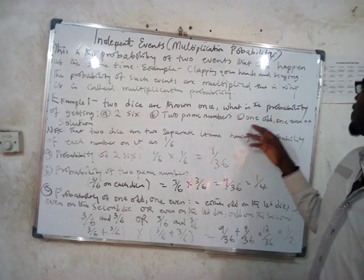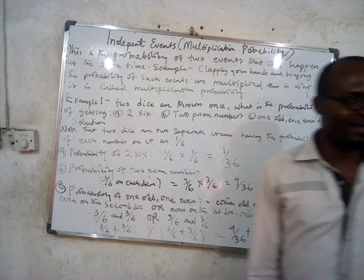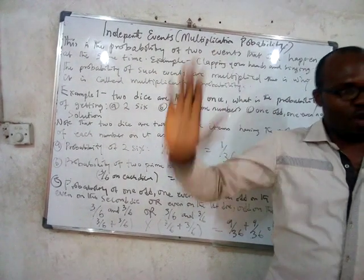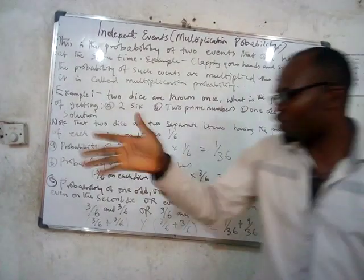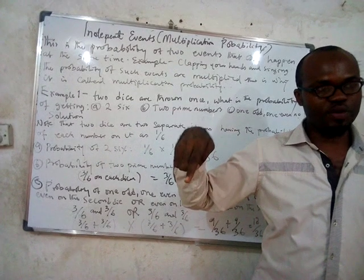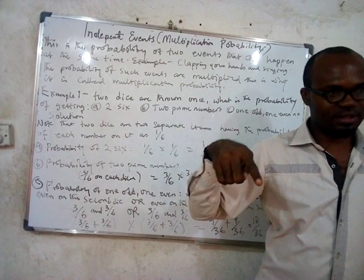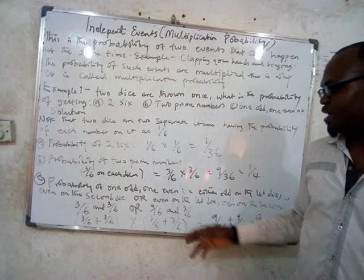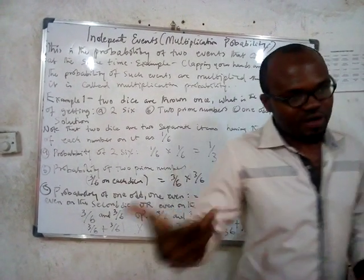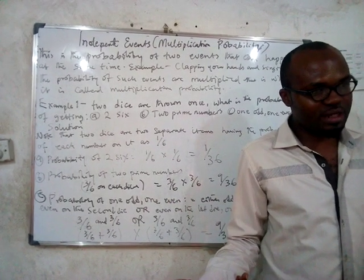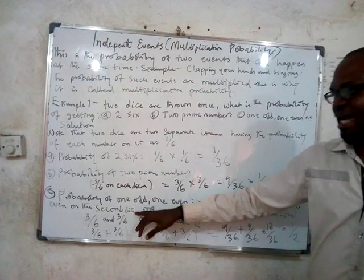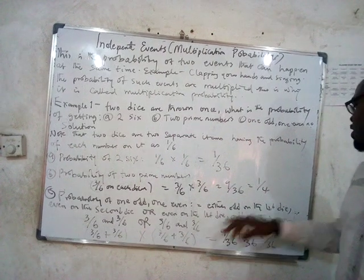Now, what is the probability of getting one odd and one even? The probability of getting an odd number on one die is 3/6, and the probability of getting an even number is also 3/6. You can have this in two ways: either odd on the first die and even on the second die, or even on the first die and odd on the second die.